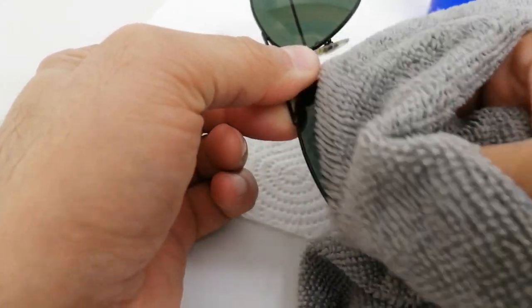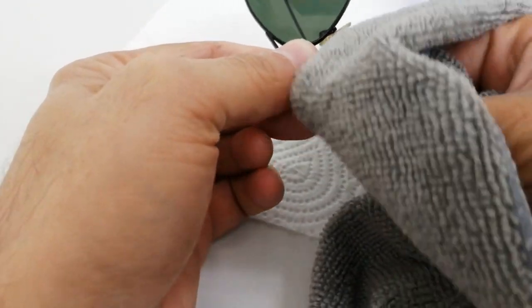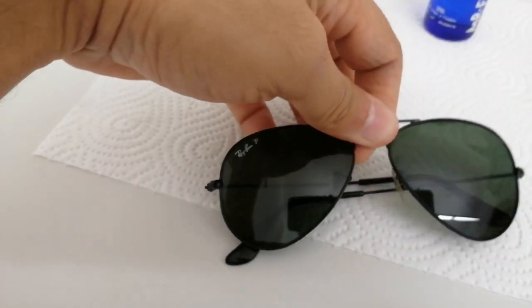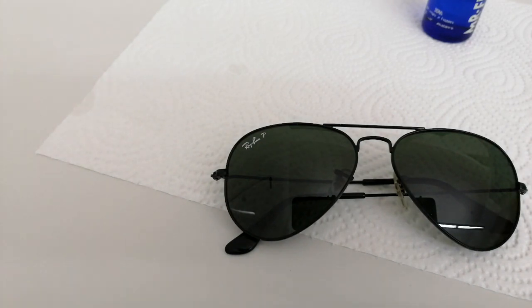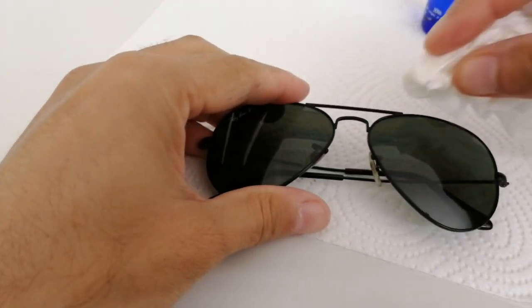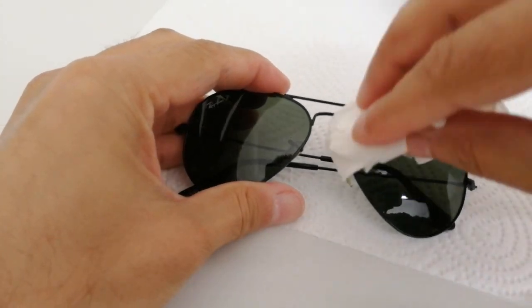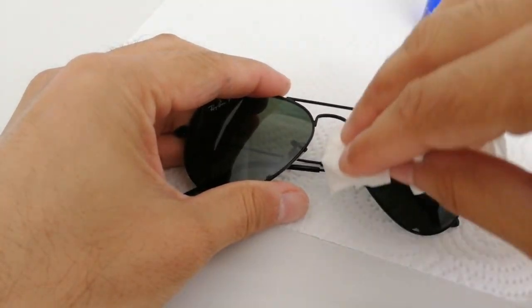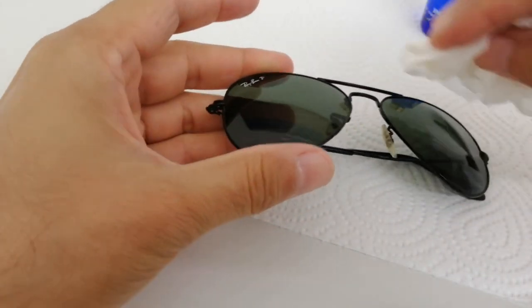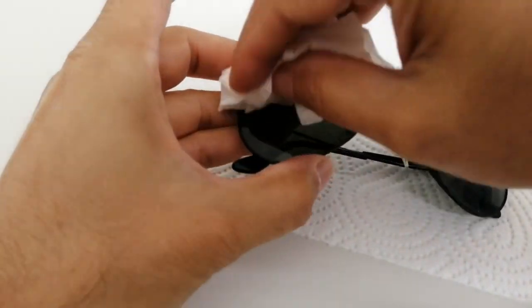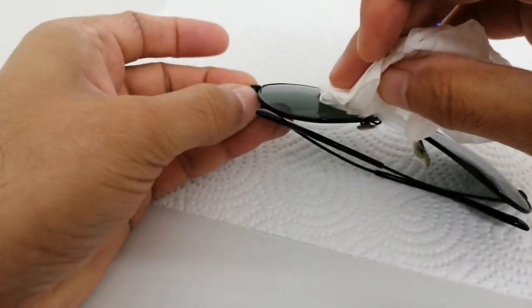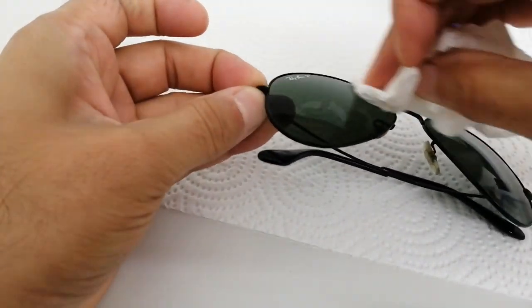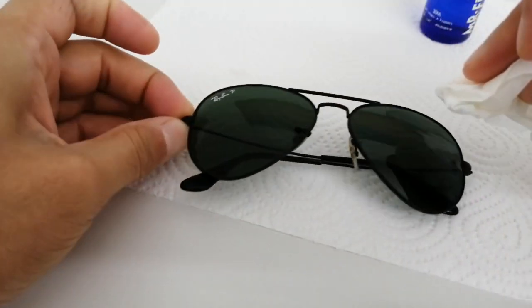Step number two: take some rubbing alcohol with a tissue paper on it and gently clean the surface with rubbing alcohol. That will make sure that there is no remnant grease on the surface of your glasses.